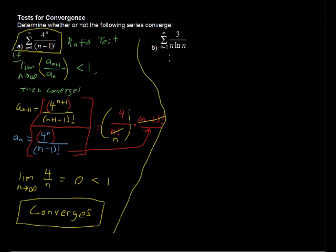Moving on to the next example. We have the sum of 3 over n times the natural log of n. And for this test, we're going to run through the integral test for this series. The integral test is more complicated in terms of calculus, but maybe less complicated in terms of just algebra.